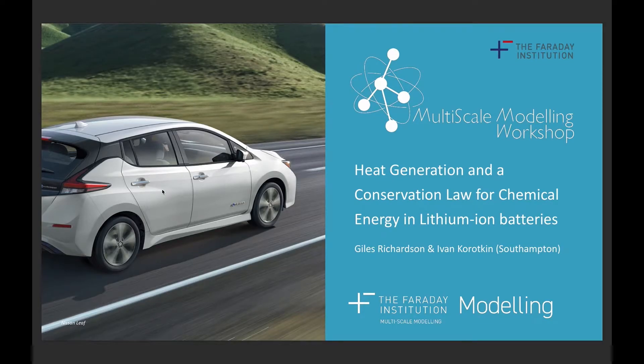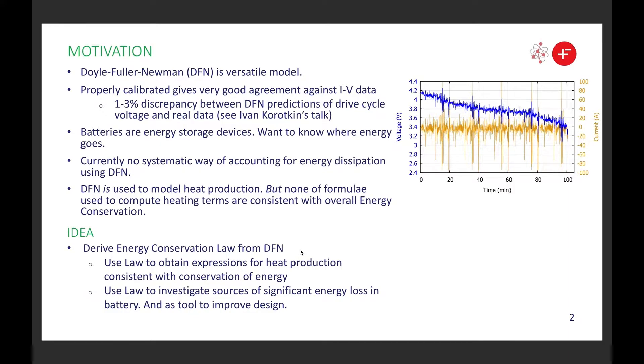This is work with Ivan Korotkin, also in Southampton, on energy in the DFN model. The motivation really comes from the Doyle-Fuller-Newman model, which is a very versatile model. If it's properly calibrated, it gives extremely good agreement to current voltage data. If you listen to Ivan Korotkin's talk, he's going to talk about some work he's done with Alana Zulka in Lancaster. Alana's parameterized cells, and Ivan has used the parameterization in the model and shown that there's very small discrepancy between the predictions of the DFN model and the experimental results.